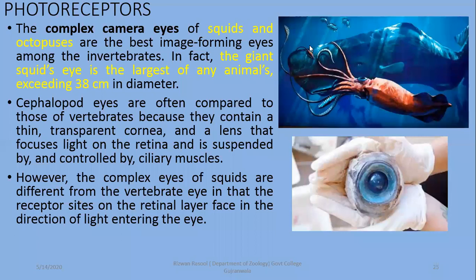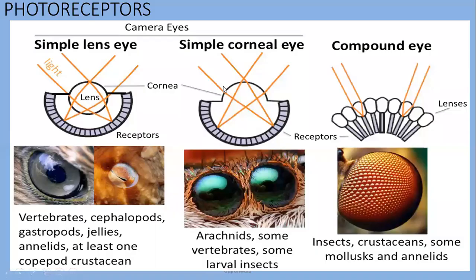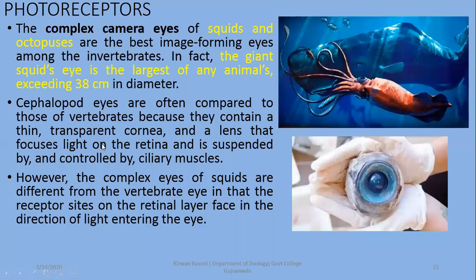In vertebrates there are complex camera eyes. In this diagram you can compare simple lens eyes and simple corneal eyes. Vertebrates and cephalopods — cephalopods in mollusca, such as octopus and large squid — have simple lens eyes.